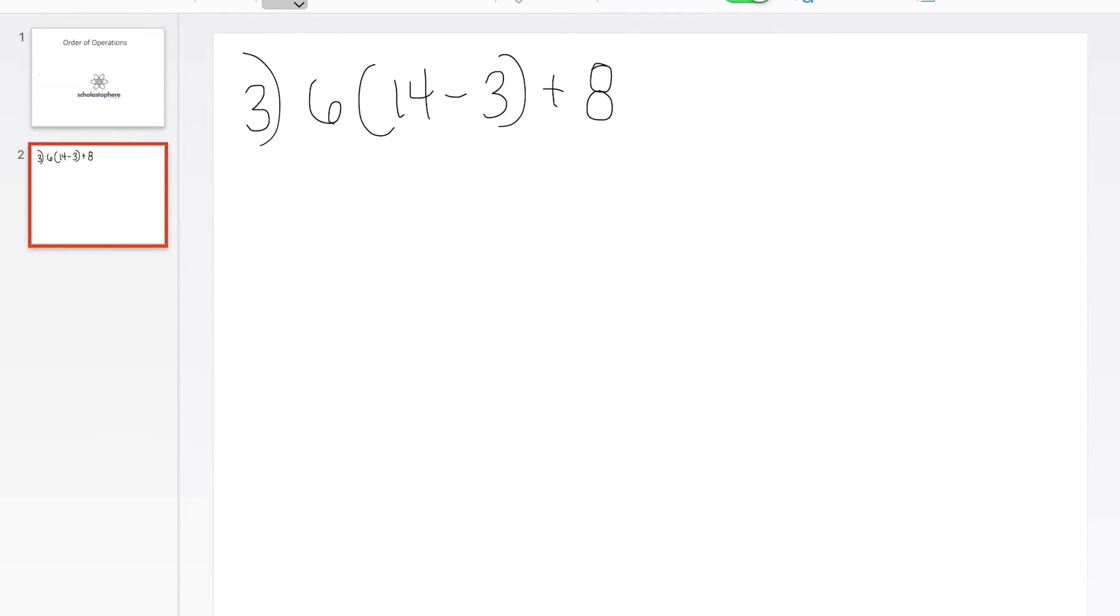And one last problem for today's topic is 6 parentheses 14 minus 3 close parentheses plus 8. Now this one is a little bit easier than the previous problem. So what we want to do here is we want to have our acronym, please excuse my dear Aunt Sally, written somewhere on the page as a reminder.